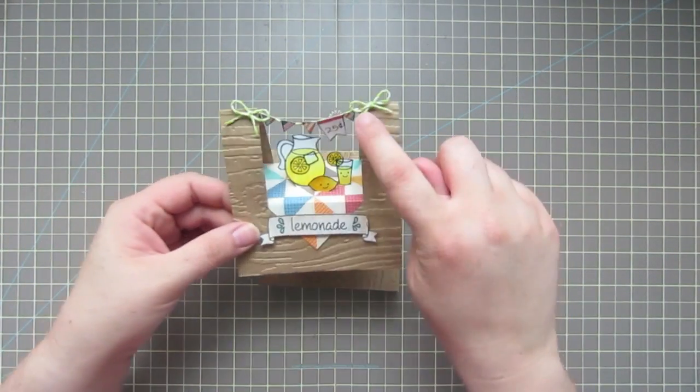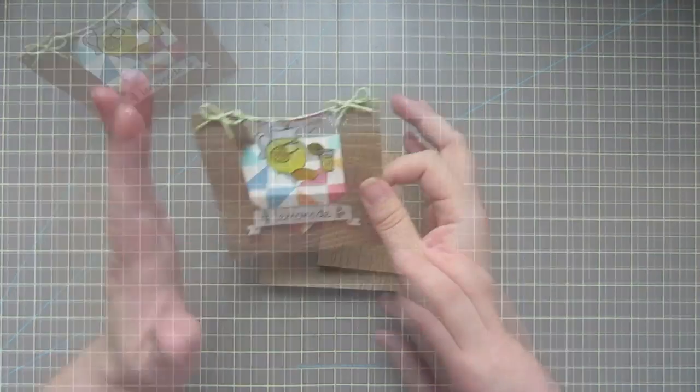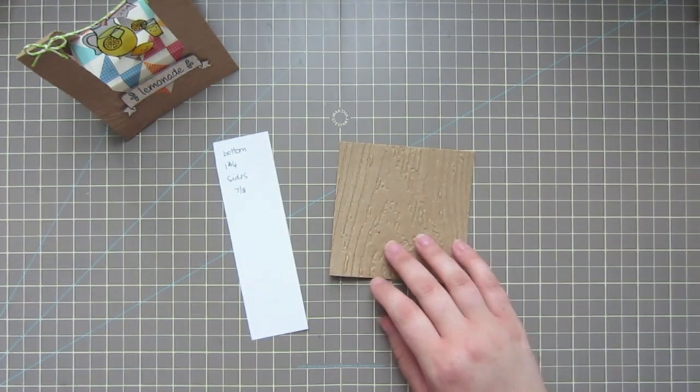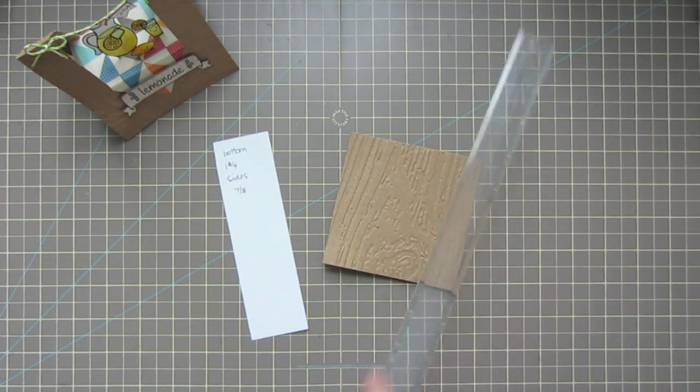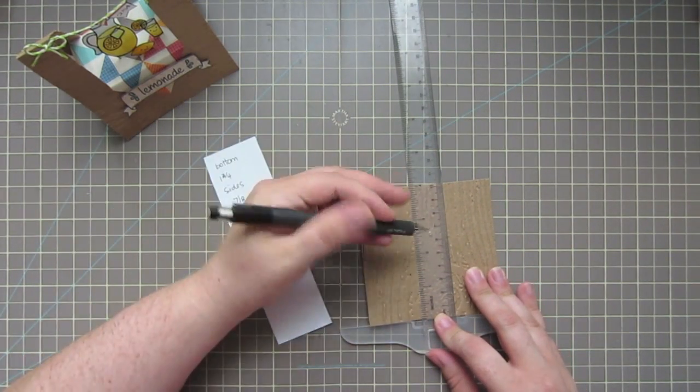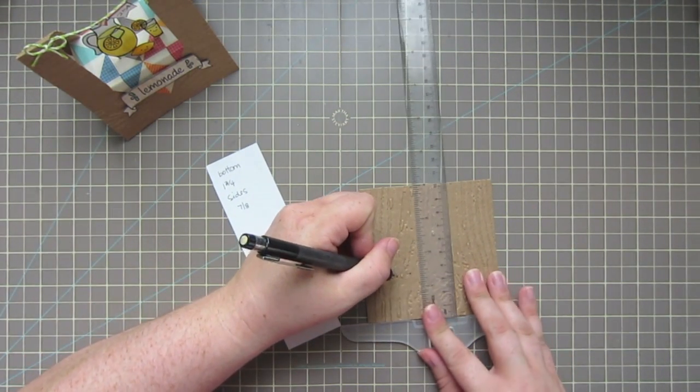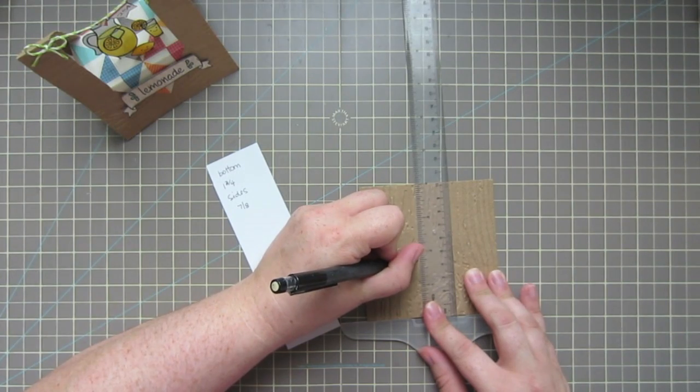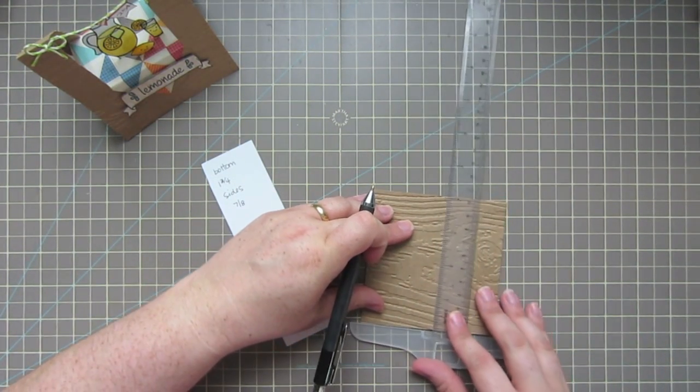So to begin, we're going to cut out the little stand. I'm going to take a T-square ruler and measure up one-third of one and three-fourths inches from the bottom, and I'm just going to go ahead and mark that.